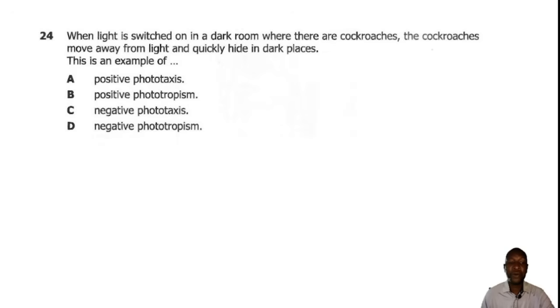Question 24. When light is switched on in a dark room where there are cockroaches, the cockroaches move away from light and quickly hide in darker places. This is an example of... When cockroaches are moving away, away is always a negative response from light. So this is negative phototaxis. The correct answer is C.